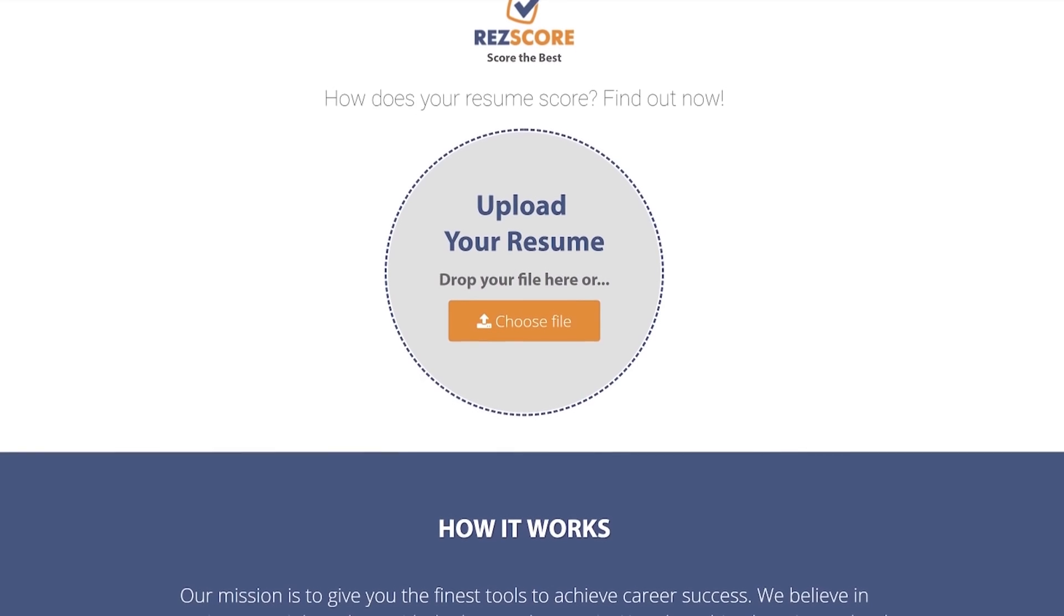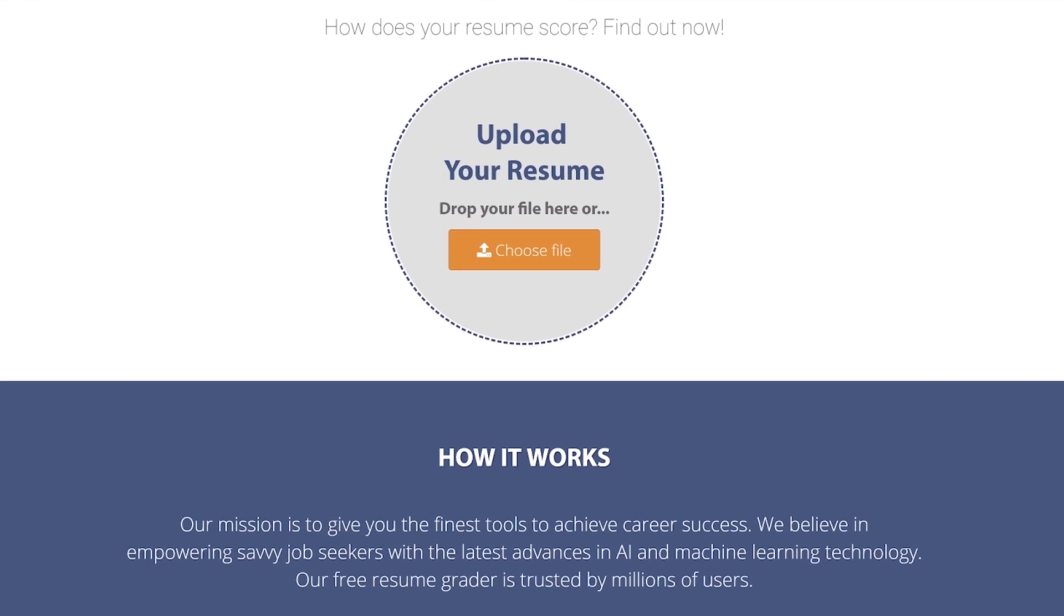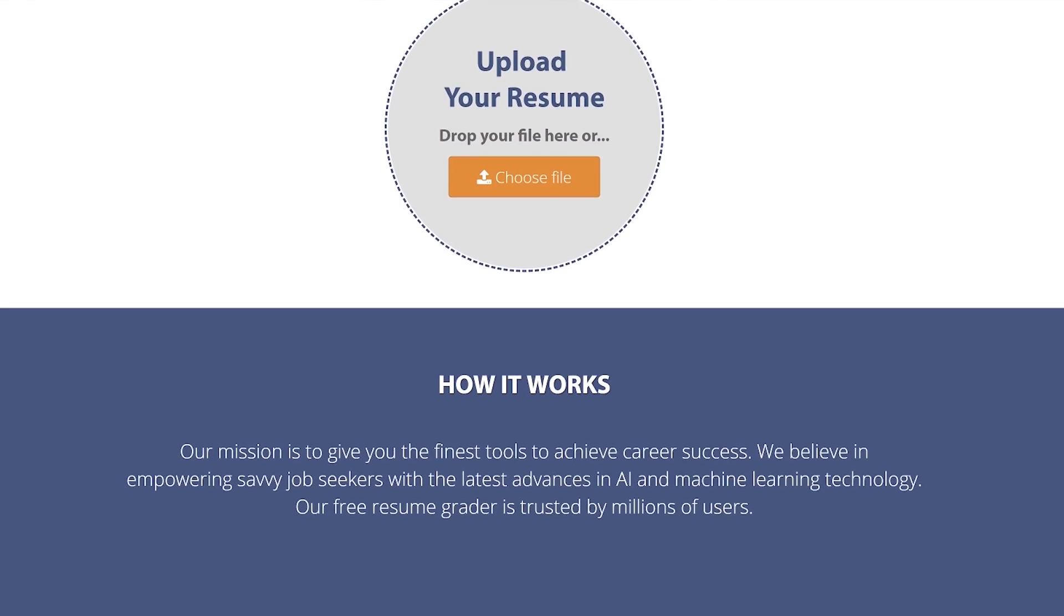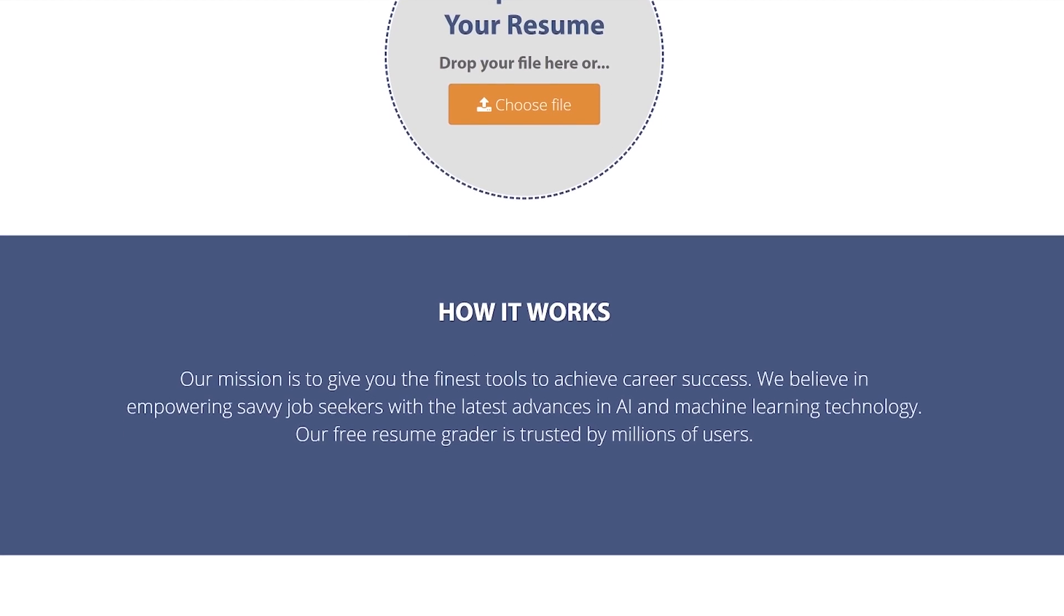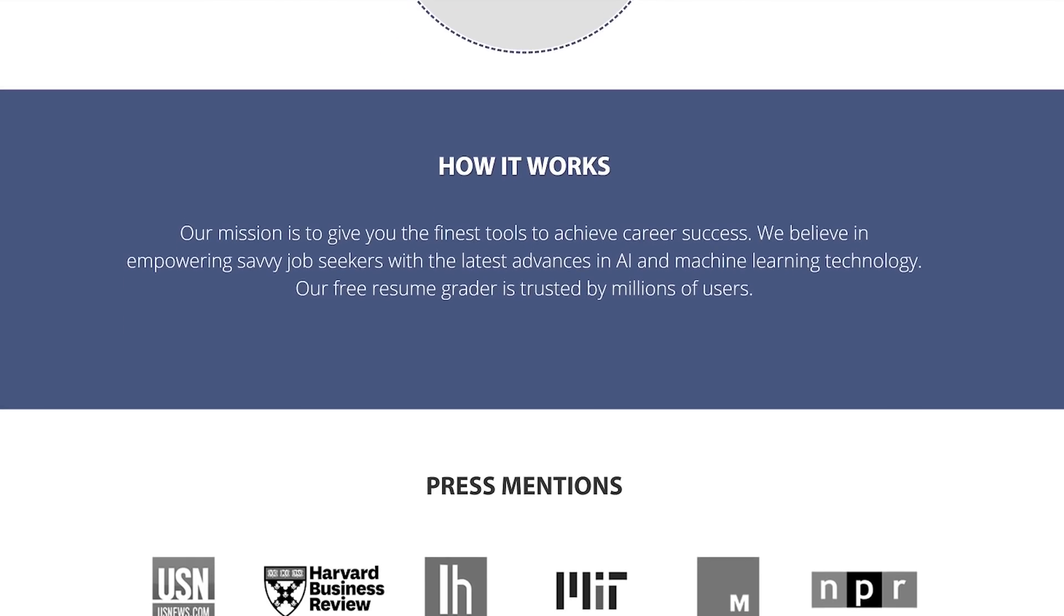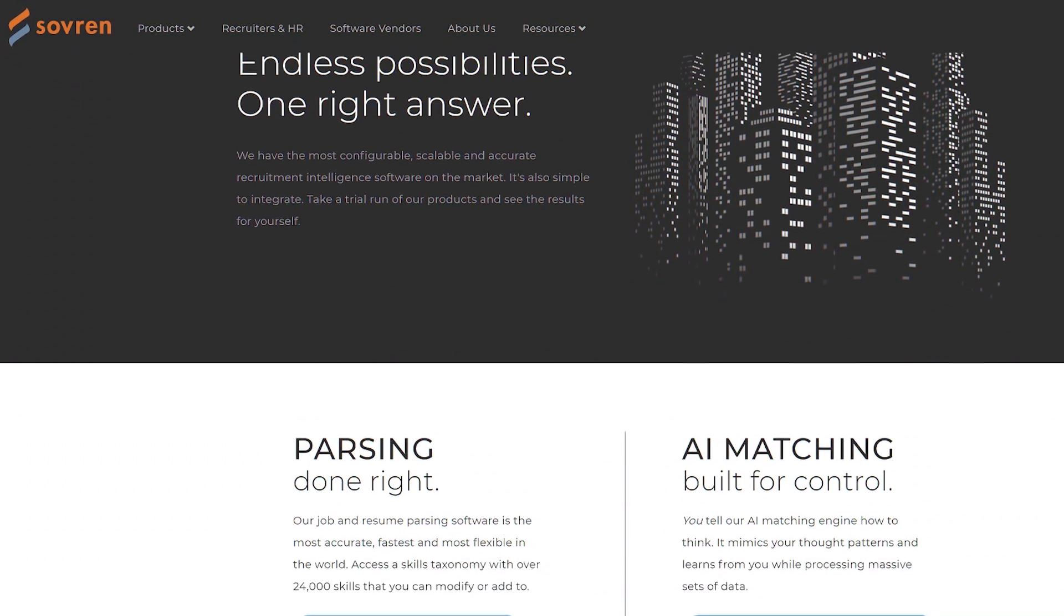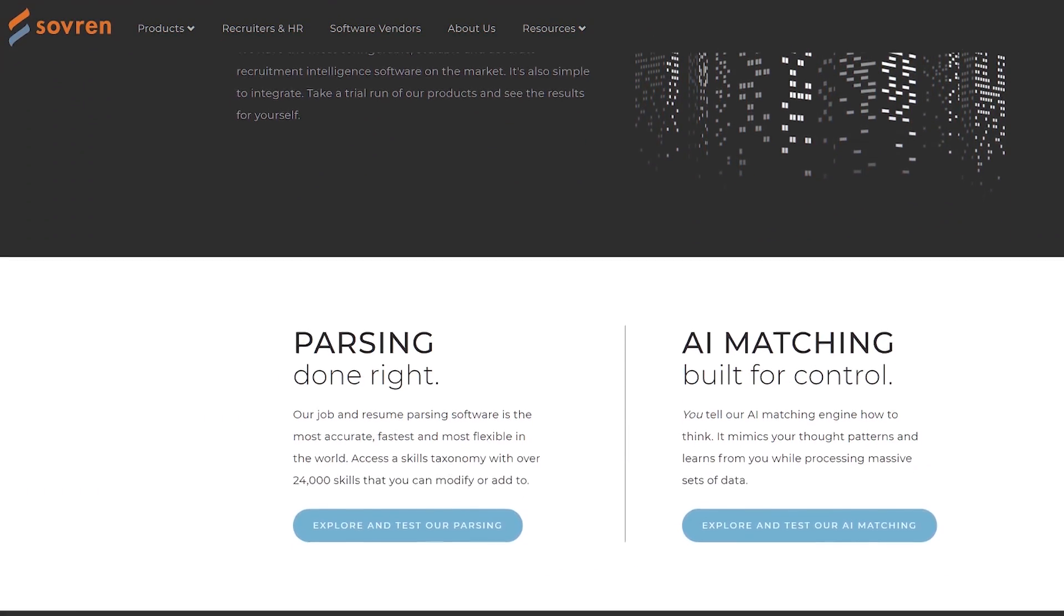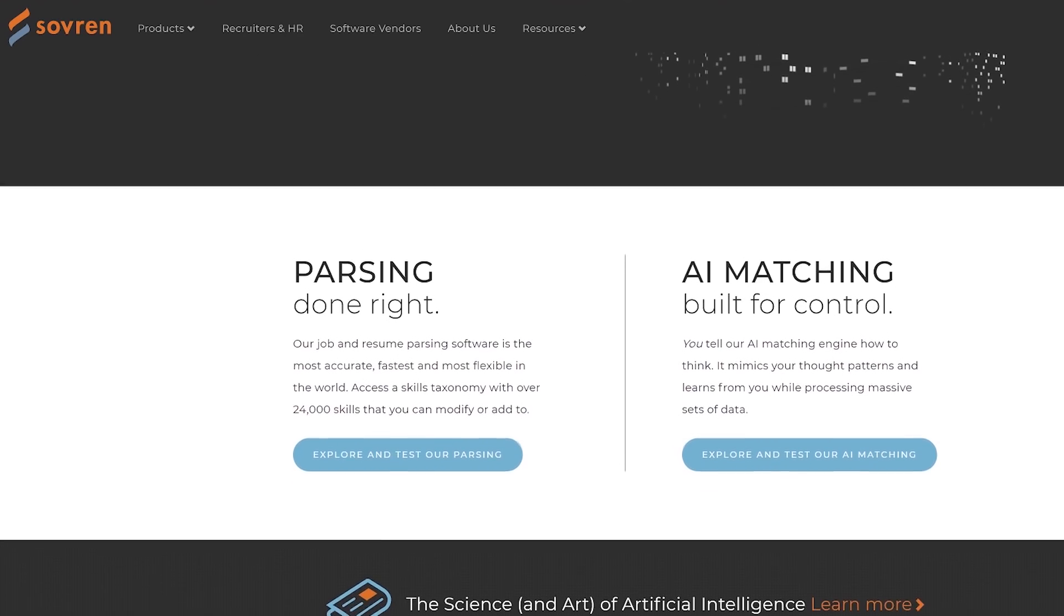ResScore is one startup that does that for candidates. They can improve their chances of landing a specific job by using their tool to optimize their resume. And on the recruiting side, Sovereign does the same for companies looking to hire candidates. So how do we do this?